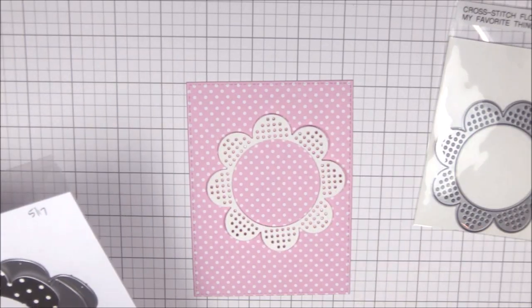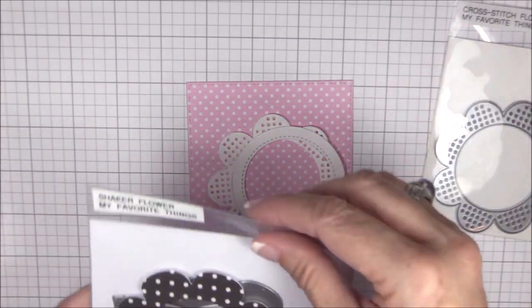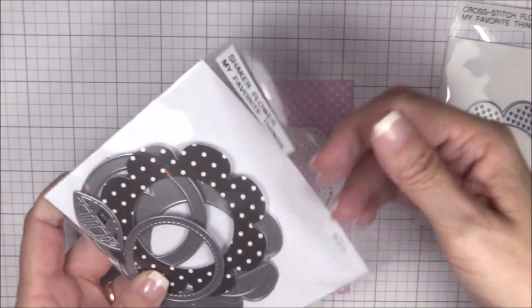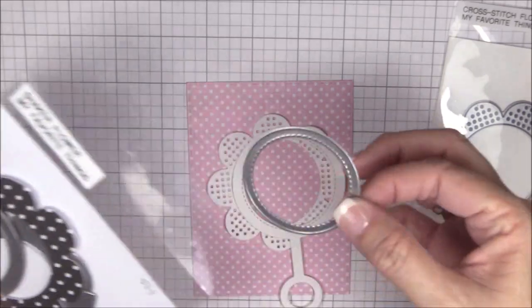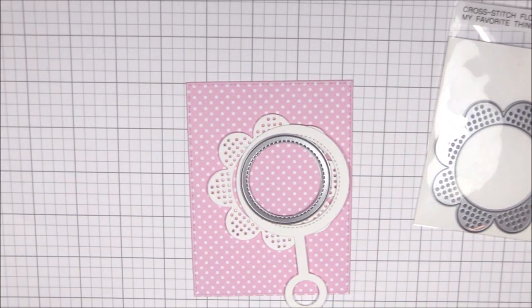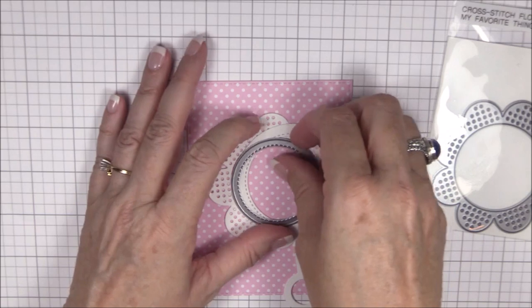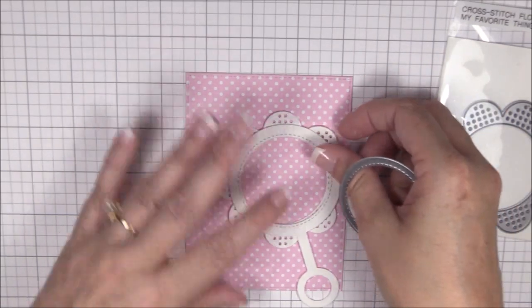Off camera, I die cut the cross stitch flower and baby rattle die-namics from some smooth white cardstock. I also adhered the polka dot paper to a smooth white panel for stability, and then die cut it using the a2 stitched rectangle stacks set one die-namics.